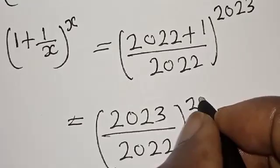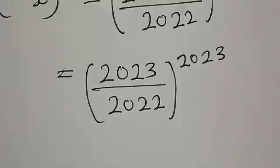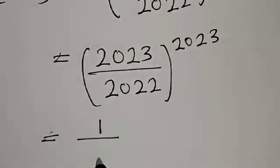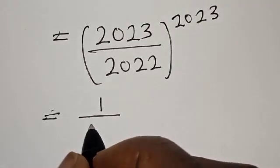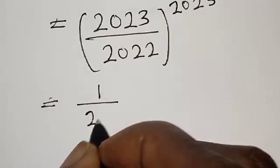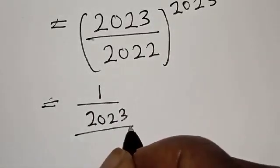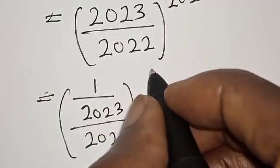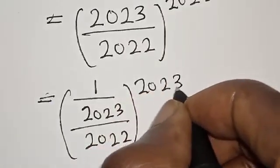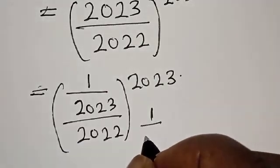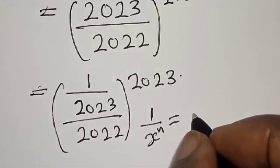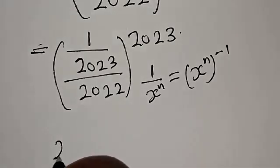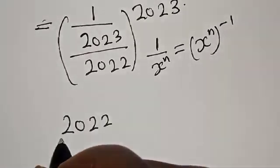Now let's transform this expression. Recall that (1/s)^n = s^(-n). Applying this, (2023/2022)^2023 can be rewritten as (2022/2023)^(-2023).